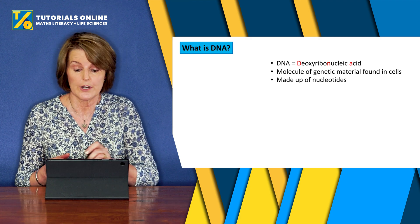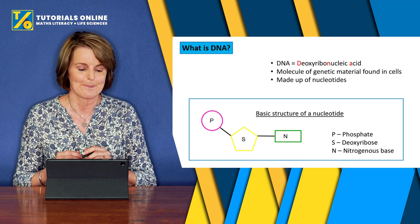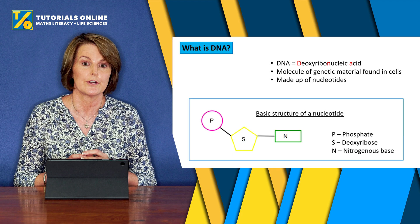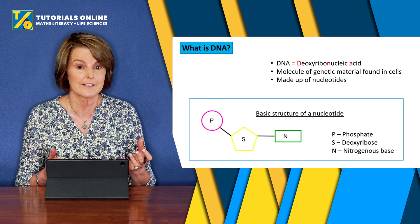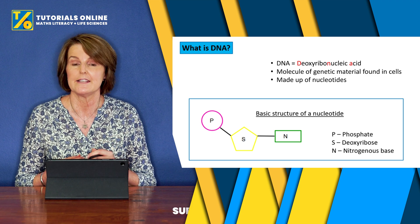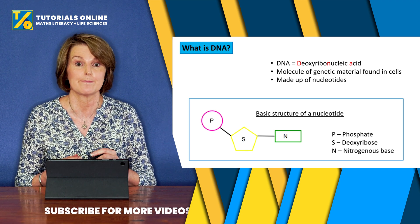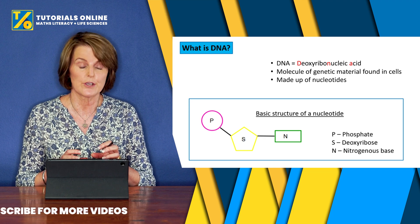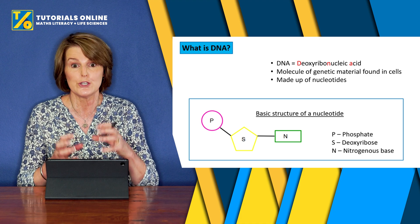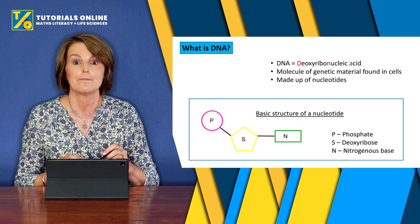Let's look at what a nucleotide looks like, because that's a very, very important part of DNA. In that block you can see the basic structure of a nucleotide. It consists of a phosphate, a sugar — which in the case of DNA is deoxyribose — and then you have a nitrogenous base. Those three components make up the nucleotide, and as we go along you'll see how those nucleotides build to make the ladder that makes up DNA.